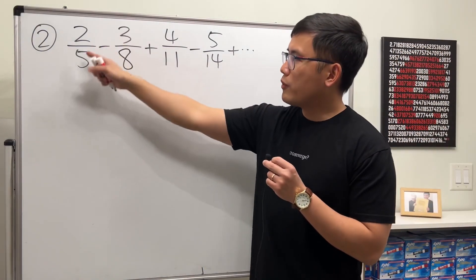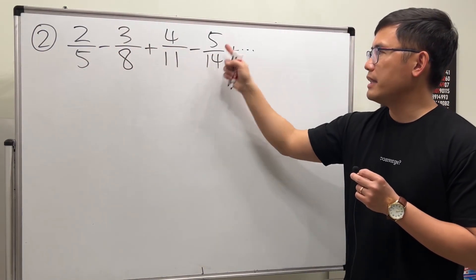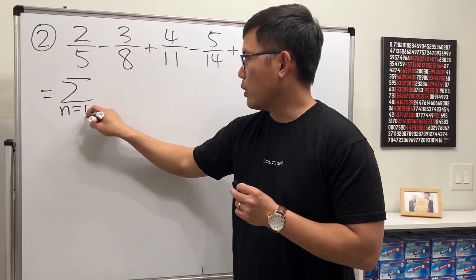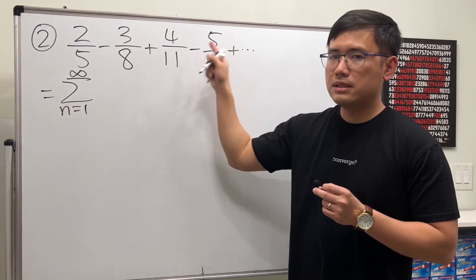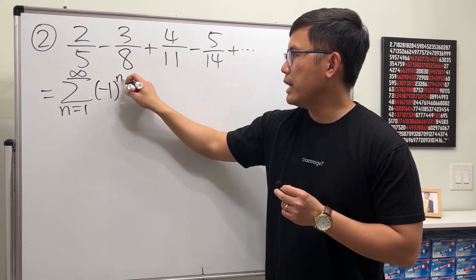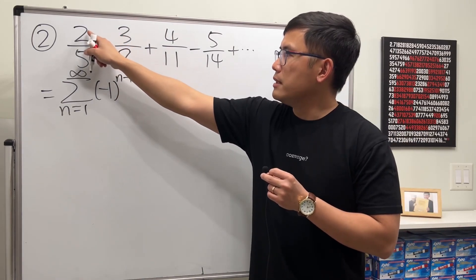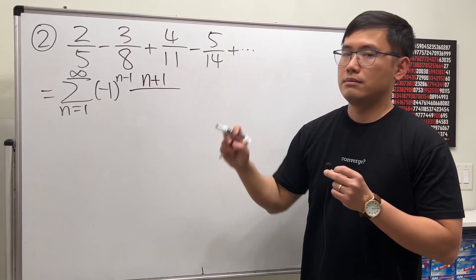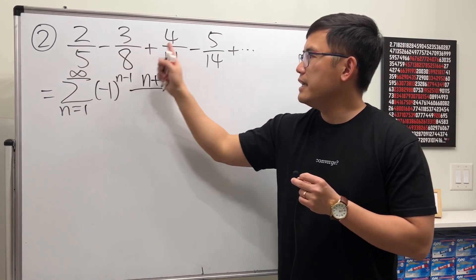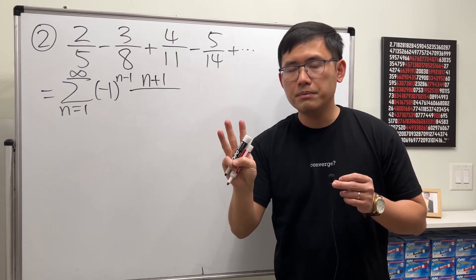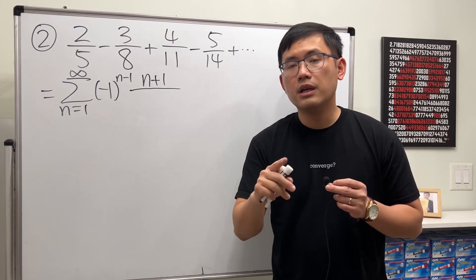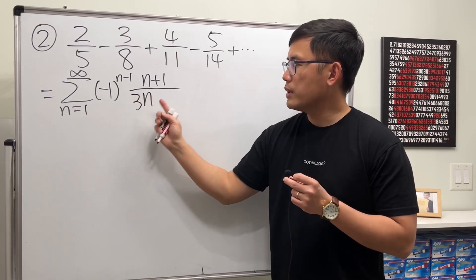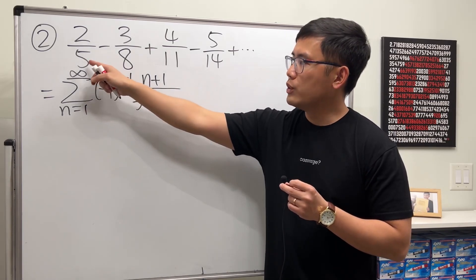Number 2: 2/5 minus 3/8 plus 4/11 minus 5/14 and so on. Let's put this in sigma form with n from 1 to infinity. It starts positive, negative, positive, negative, so we need negative 1 to the n minus 1 power. The numerator is 2, 3, 4, 5 — since n starts at 1, the top is n plus 1. The denominator is 5, 8, 11, 14 — goes up by 3, so it's 3n, and when n equals 1, 3 times 1 is 3, so we need to add 2 to get 5. The formula is (n+1) over (3n+2).